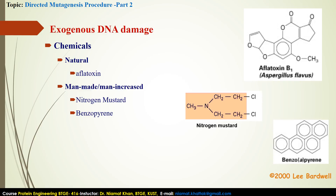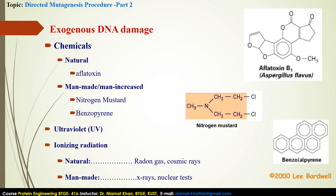In addition to chemical DNA damaging agents, DNA can also be modified by applying some physical agents, for example UV light present in sunlight or ionizing radiations. Ionizing radiation may be natural, such as radon gas, or man-made such as X-rays or from nuclear tests.